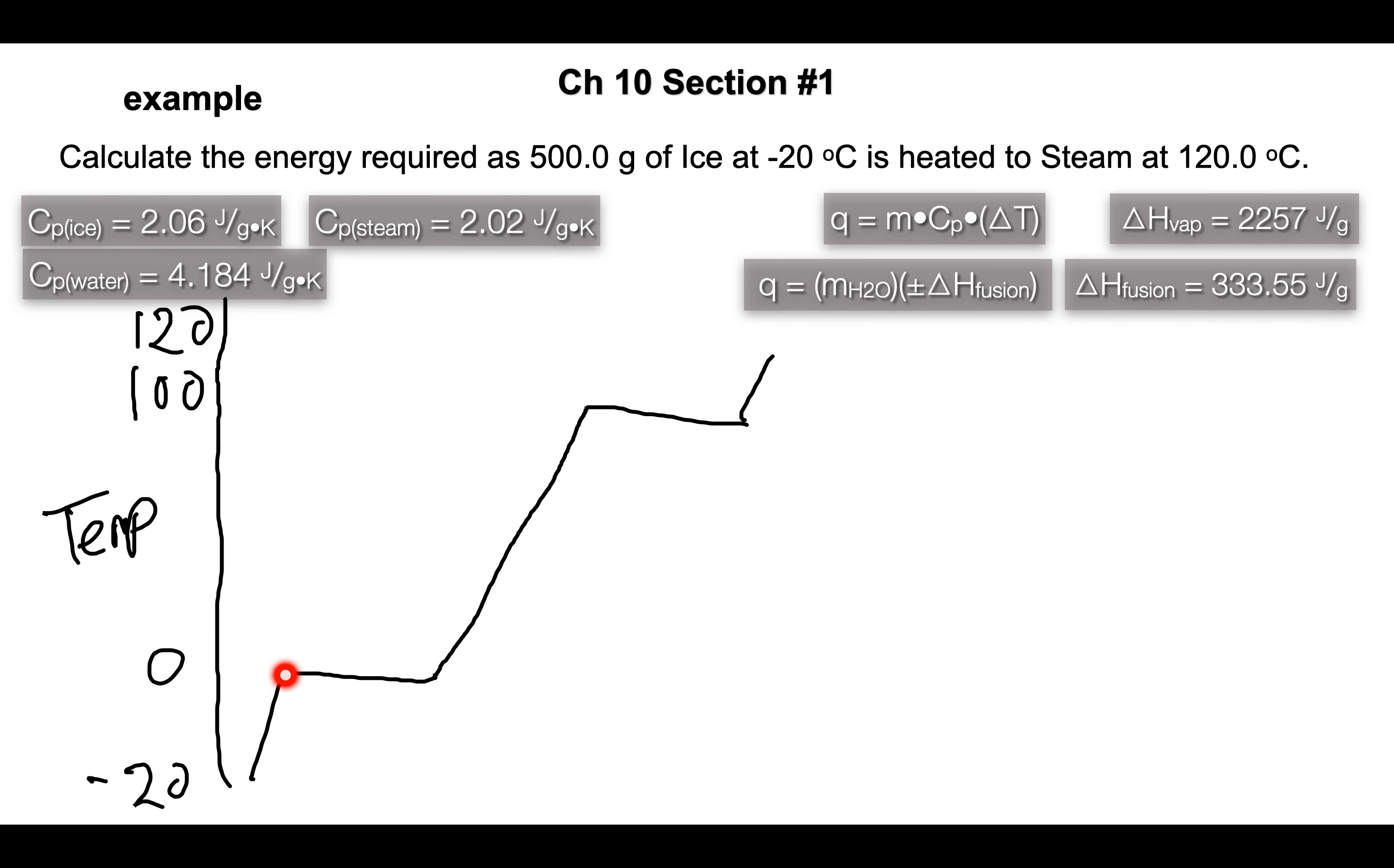So negative 20 to zero will be temperature change MCΔT and that will be for ice. We're gonna use the Cp for ice. And then from zero to whatever it takes we're gonna then use delta H here and we're gonna use the energy to melt ice. Once we have the ice melted then we're gonna go back to MCΔT.